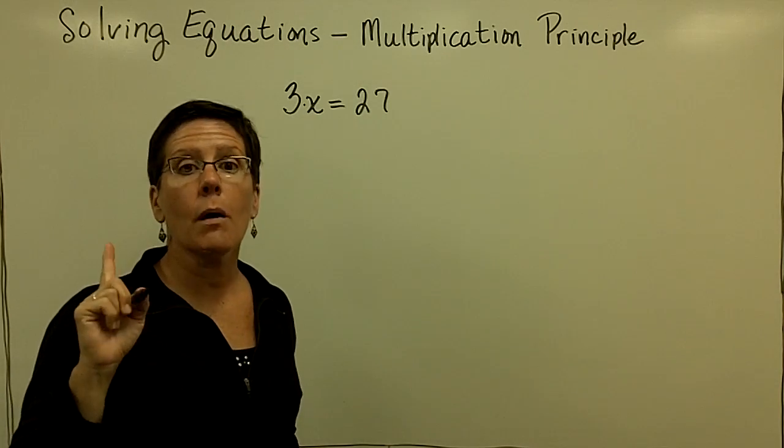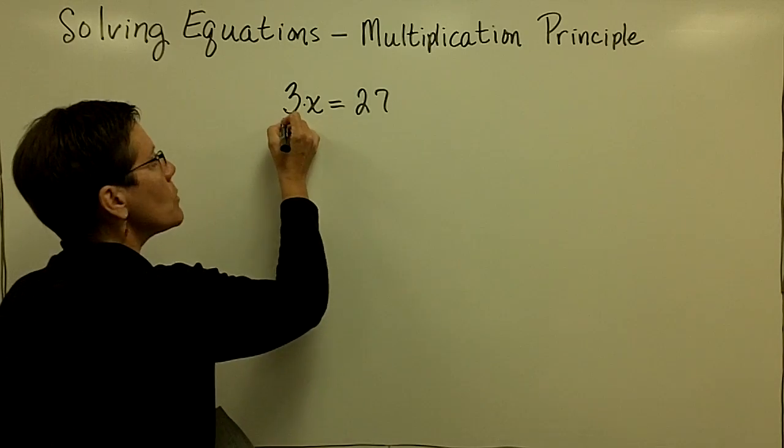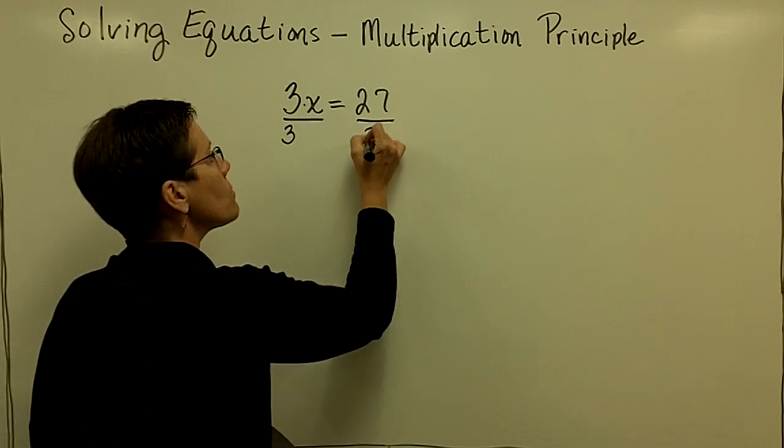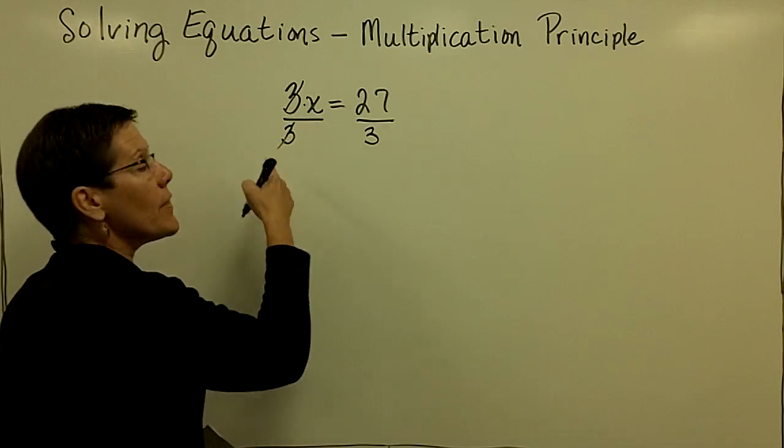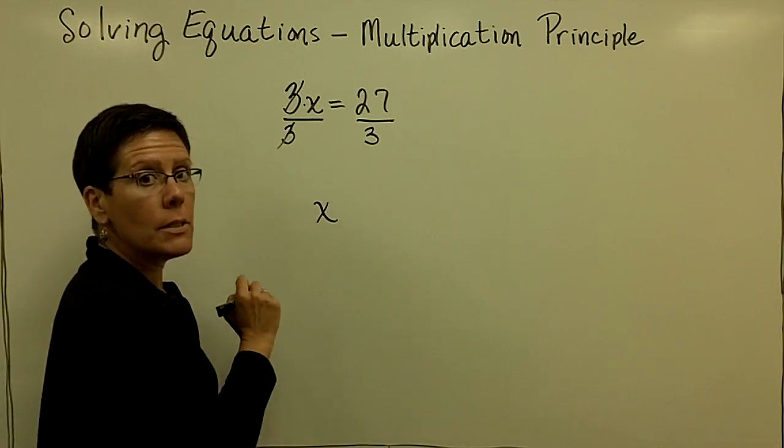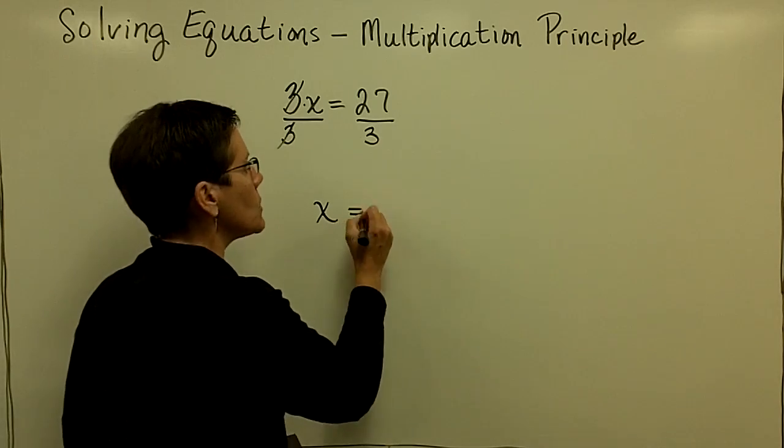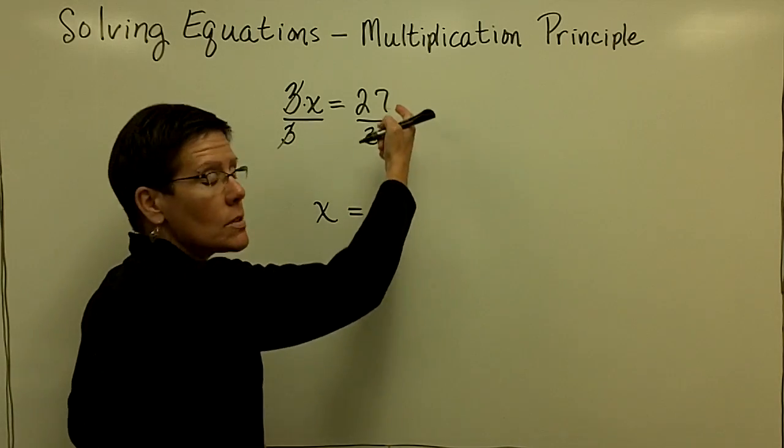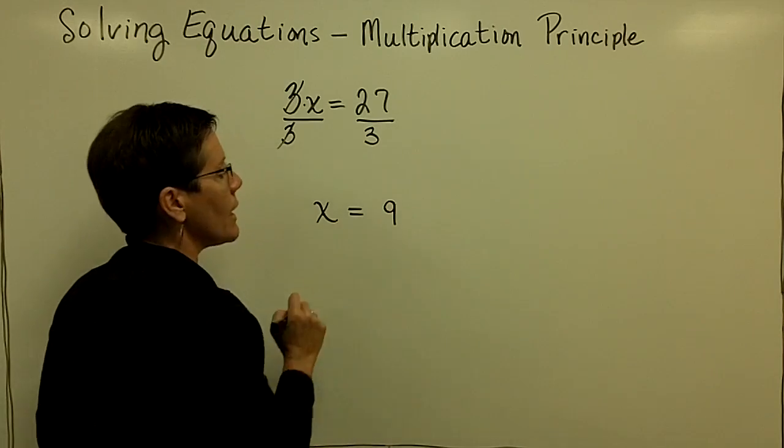I want that to just become a 1x. So what I do to both sides is I divide both sides by 3 because I want that to become a 1x. I don't typically write the 1 down. I just say x is equal to whatever the arithmetic is right here, and 27 divided by 3 is equal to 9.